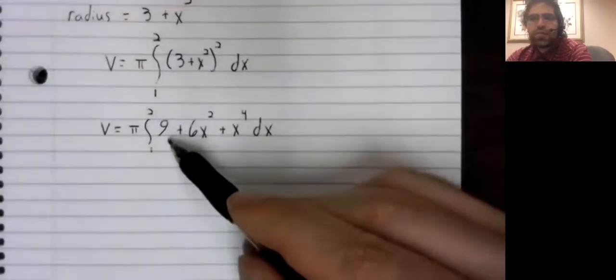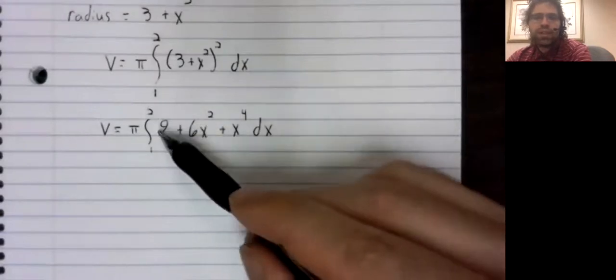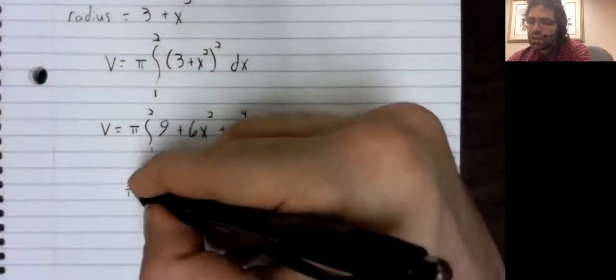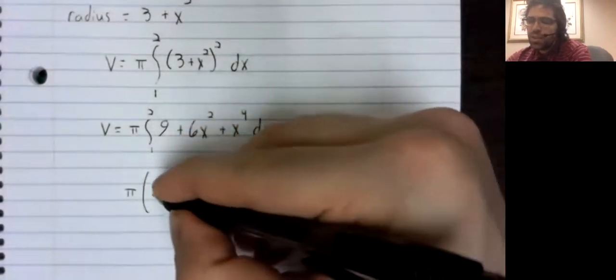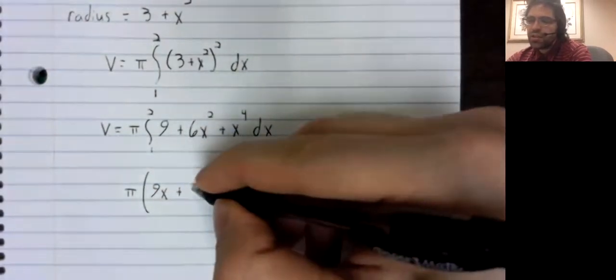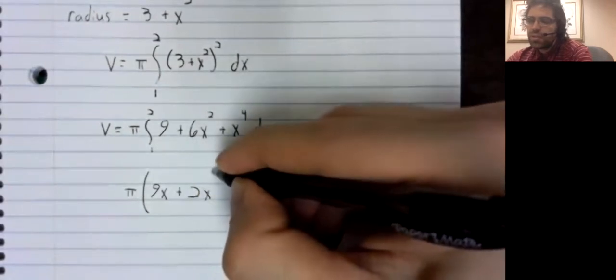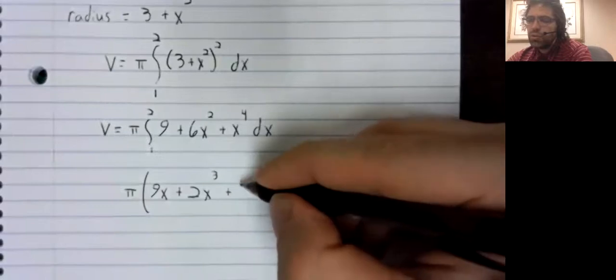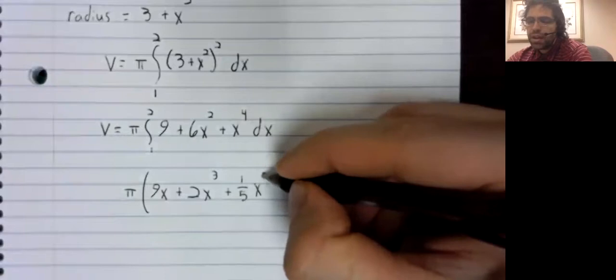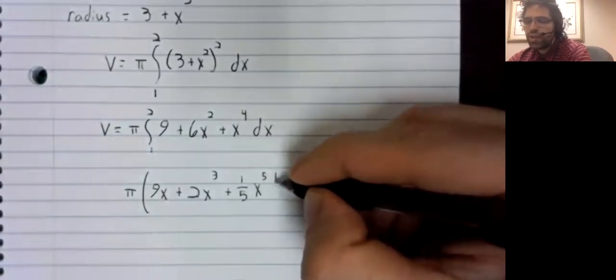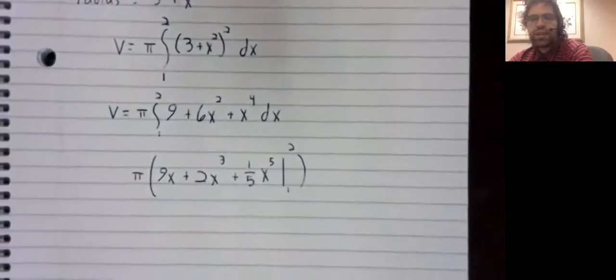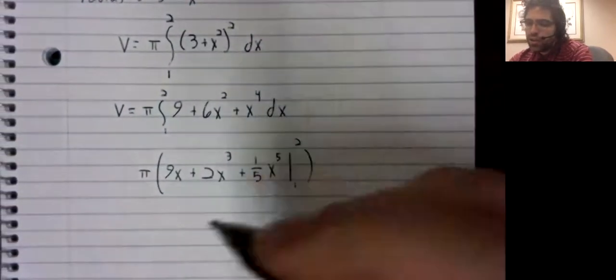And now that we've figured this out, we can just take each of these anti-derivatives individually. The anti-derivative of nine is nine x, two x cubed, one fifth x to the fifth.